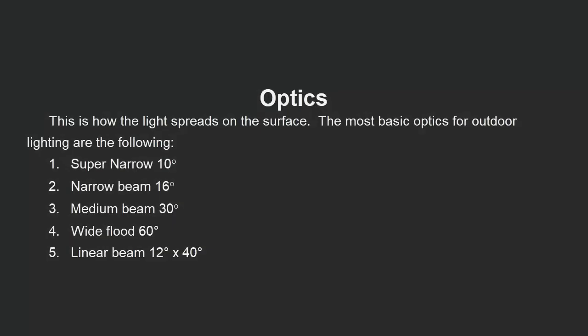We're done with the CRI, so let's proceed now with optics. When we talk about lamps or linear optics, we are dealing with how the light spreads on the surface. The most basic optics for outdoor lighting are: super narrow, narrow beam, medium beam, wide flood, and linear beam, which is 12 by 40 degrees.